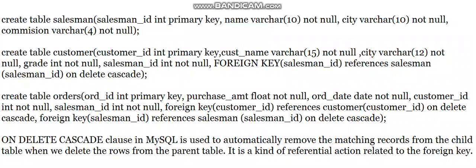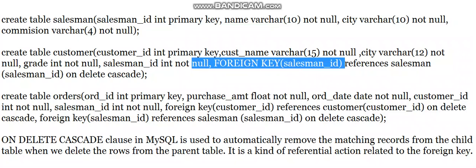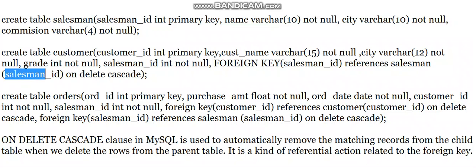I am adding salesman_ID as INT NOT NULL in the customer table, but defining the foreign key constraint separately at the end — this is a different approach compared to our first lab program. I write: FOREIGN KEY (salesman_ID) REFERENCES salesman(salesman_ID), meaning salesman_ID in customer references the salesman_ID in the salesman table.